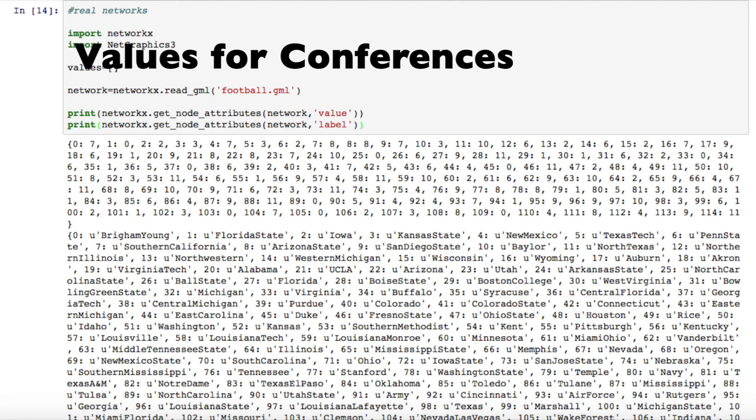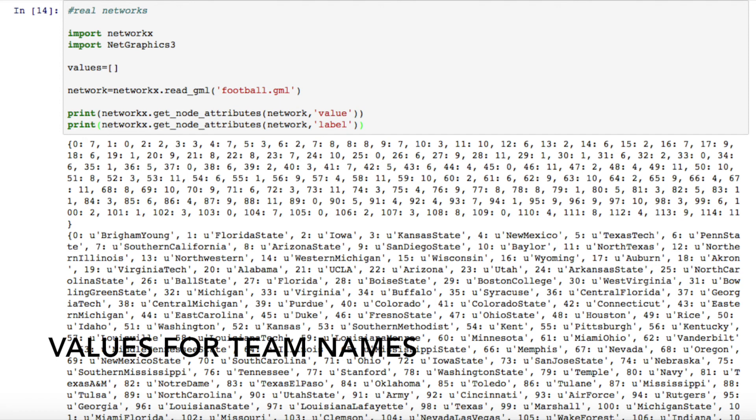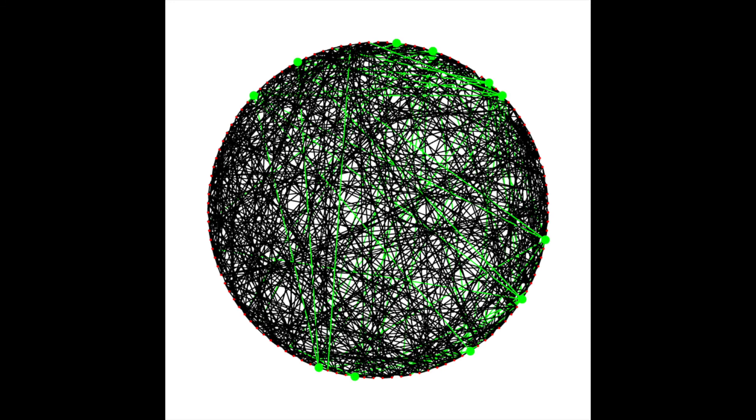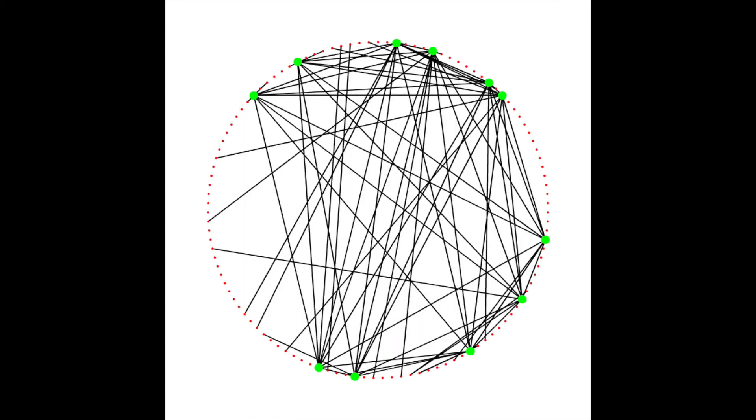However, the data has values for each node indicating which conference that each team is in. So, we can look at just Big Ten teams, for example. Here, the Big Ten conference teams are shown in green. Looking only at these games, we can see that they occur mainly with other Big Ten teams, which makes sense.